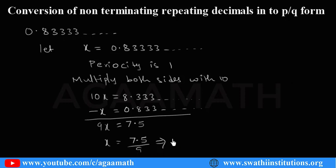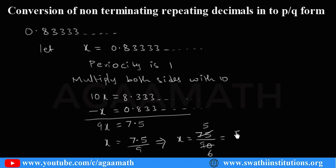When you simplify, x equals 75 by 90. Now, 15 times 5 is 75 and 15 times 6 is 90, so that simplifies to 5 by 6. So x equals 5 by 6. x is 0.83333 and so on, so if you divide 5 by 6 you get the same number. This is how we convert the non-terminating repeating decimal into p by q form.